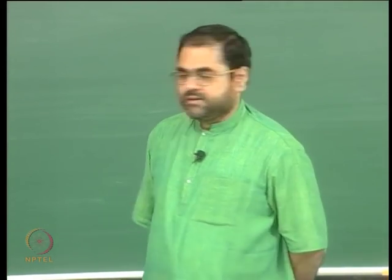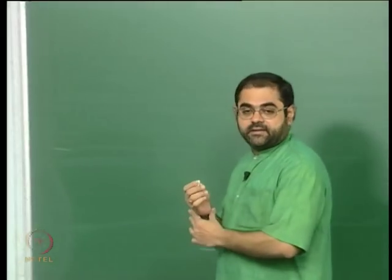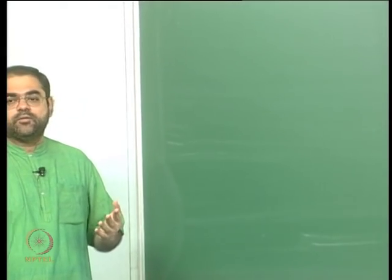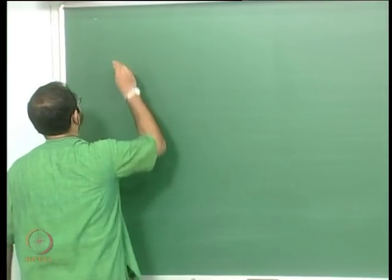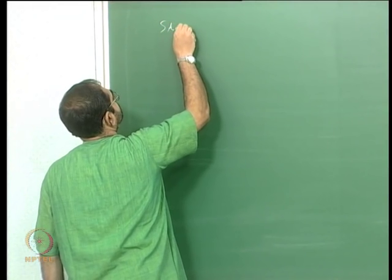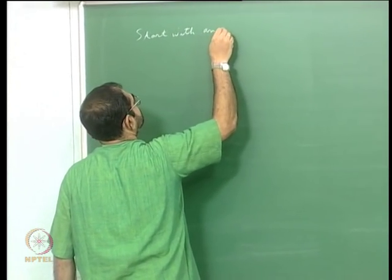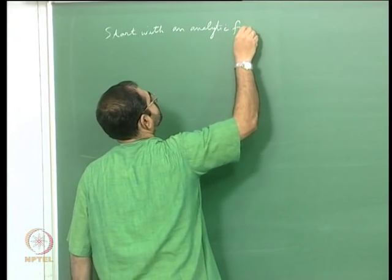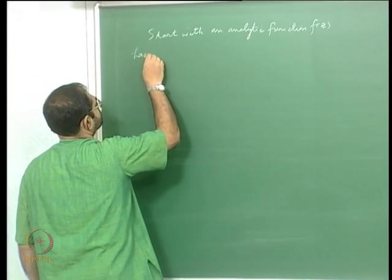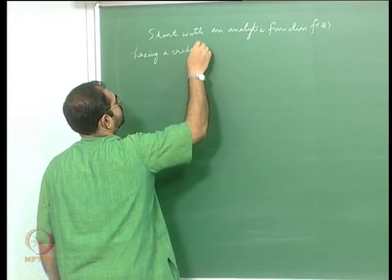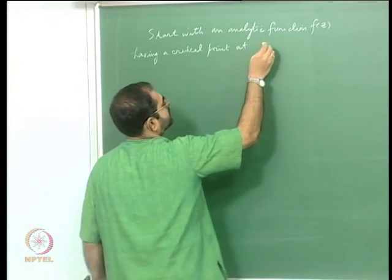Let us continue with our discussion of studying the behavior of a function in a neighborhood of the critical point. We have discussed in the previous lectures the logarithm, the various branches of the logarithm, and various branches of the power function for a fractional power. What we will do now is start with an analytic function f of z having a critical point at z equal to z₀.